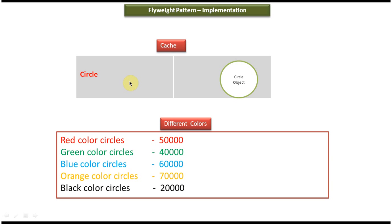Suppose I want to create a red color circle object — I have to get this circle object from the hash and fill it with the red color. And like that I can create as many circles as I want. In this way, only one circle object will be created. That circle object will be shared to create multiple circle objects.